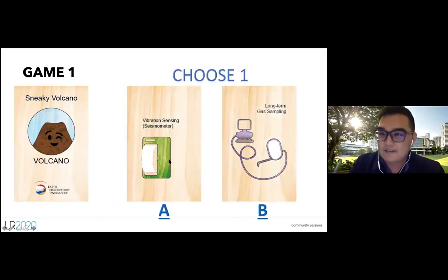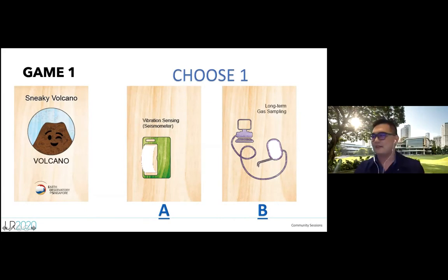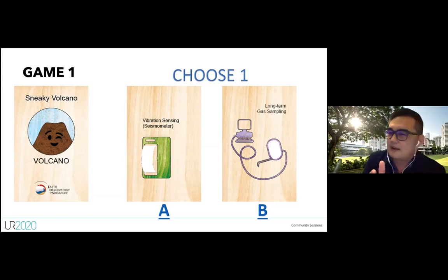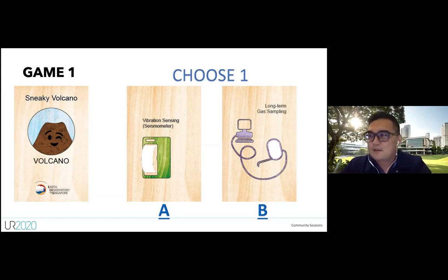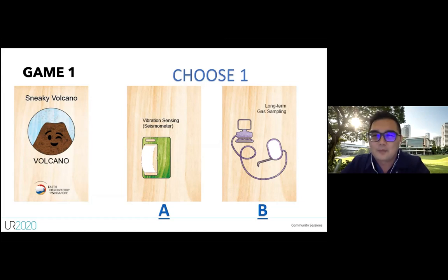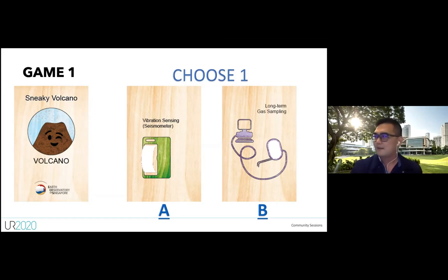I have a card face down — you don't know what I've chosen. On your hand you have two equipment options: you can choose a seismometer or a gas sampling equipment. Choose either A or B in Kahoot to test which sign I'm currently exhibiting.